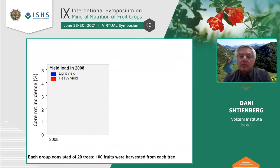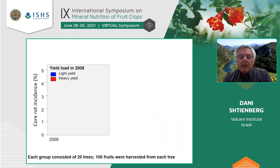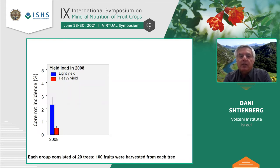During 2008, we found 20 trees with heavy yield and 20 trees with light yield in one orchard in the north. These trees were in the same orchard. After maturity, we sampled 100 fruits from each tree, cut them all, and checked the incidence of moldy core and core rot. Indeed, we found that trees with light yield had significantly higher incidence than trees with heavy yield.